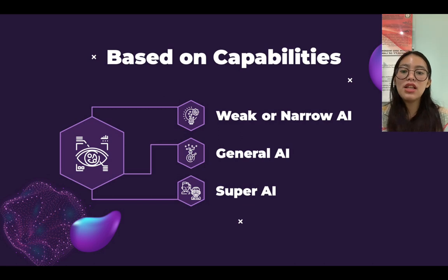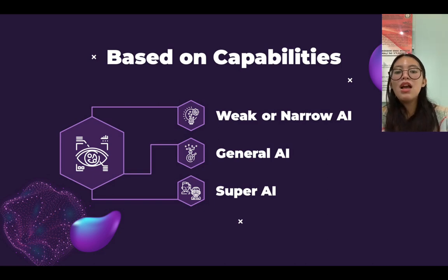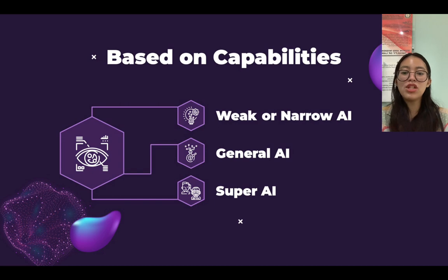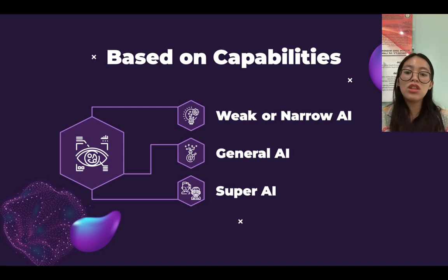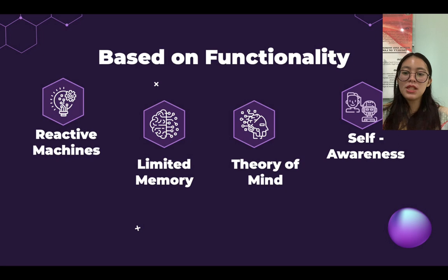The second one is general AI. General AI is a type of intelligence which could perform any intellectual task with efficiency like a human. Currently, there is no such system that exists which could come under general AI and perform any task as perfectly as a human. The last one is super AI. Super AI is a level of intelligence at which machines could surpass human intelligence and perform any task better than humans with cognitive properties. Key characteristics include the ability to think, reason, solve puzzles, make judgments, plan, learn, and communicate on its own.